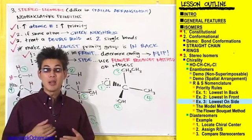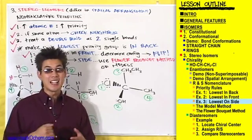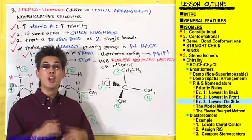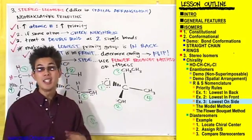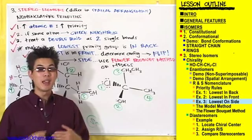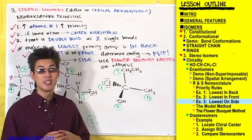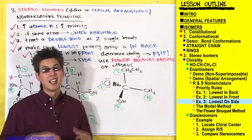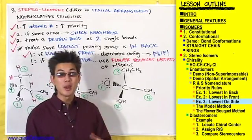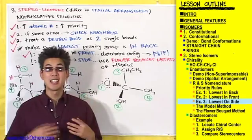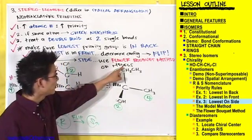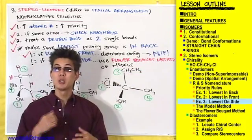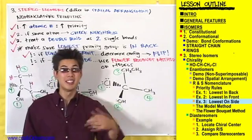We've assigned priorities. Now we just need to determine the configuration. Is the lowest priority group, the CH3, pointing back? No. Is it pointing forward? No, it isn't. It's on the side this time, so we have to approach this a little differently from the other two examples. We actually have to visualize how these atoms are arranged in space. For some people this is no problem, but for the rest of us there are two methods that can help: the model method and the flower bouquet method. Let's do it with models first, because it will help you visualize the flower bouquet method when you see it later.